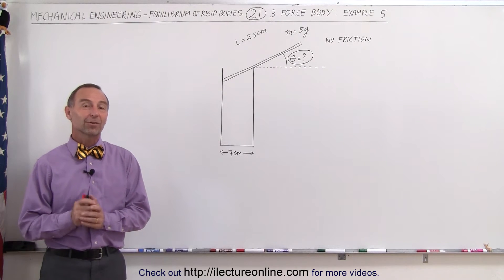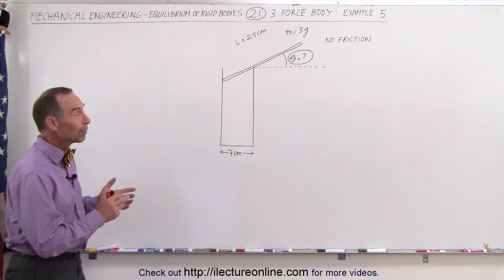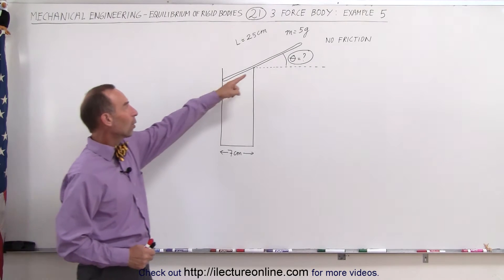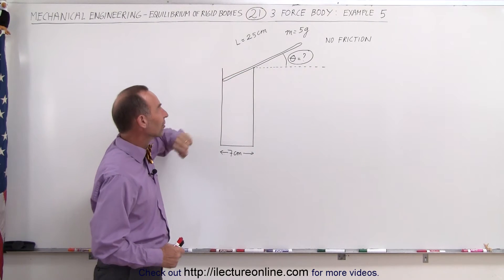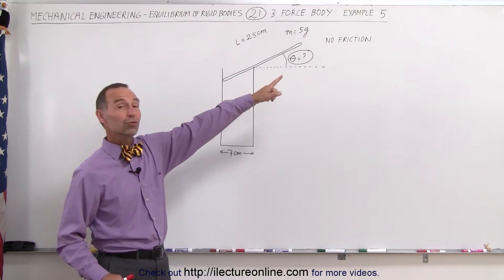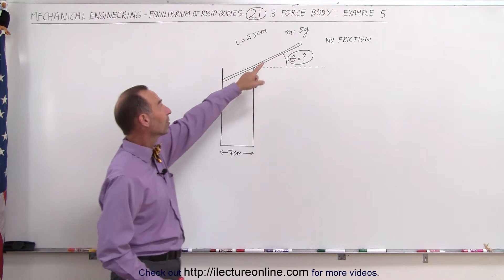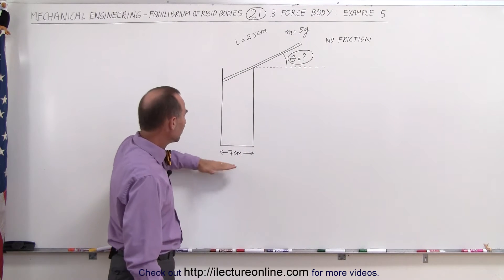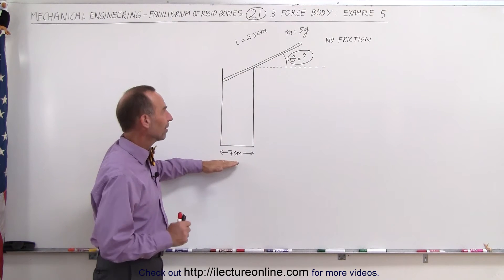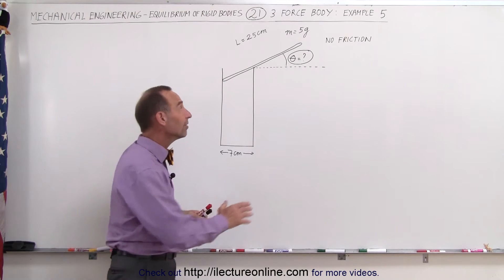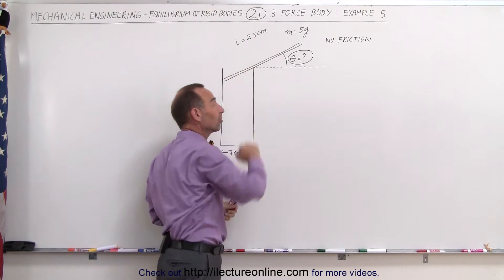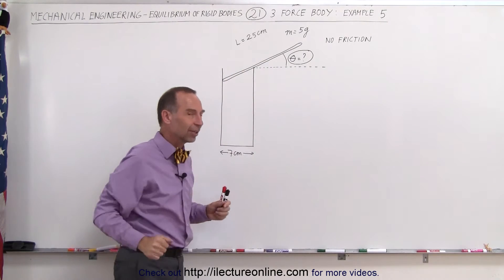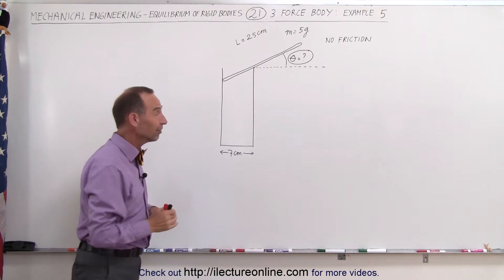Welcome to ElectronLine. Here's the next example of how to solve a three-force body. We have a glass and a glass rod that's precariously balanced on the edge of the glass. Notice there's no friction anywhere. The mass of the rod is 5 grams, the length of the rod is 25 centimeters, and the diameter of the glass is 7 centimeters. The question is: what is the angle at which the rod has to be placed so that it will not slide into the glass or fall off the edge? Very precariously balanced.